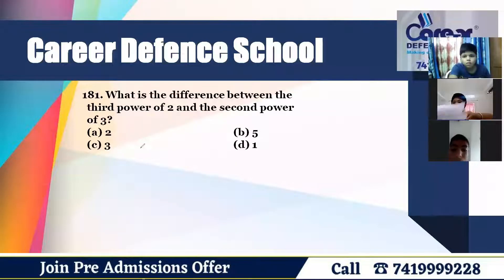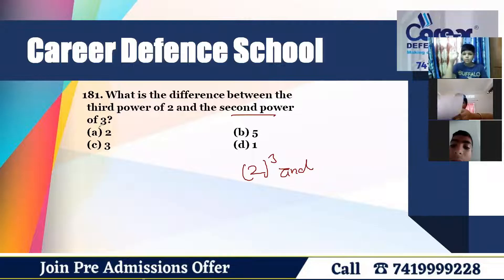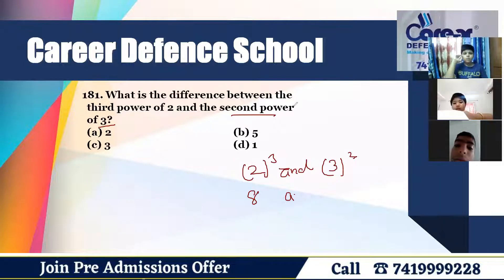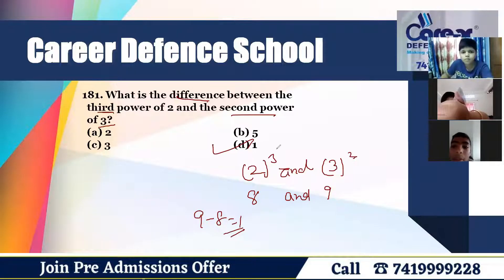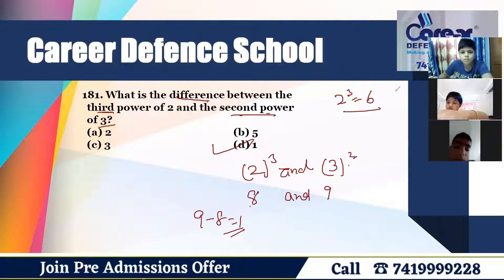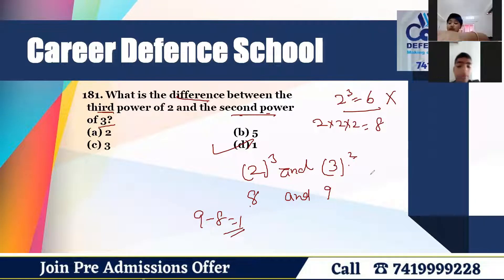What is the difference between the third power of two and the second power of three? Third power of two means two cubed — two's cube is eight. Second power of three means three squared — three squared is nine. Nine minus eight equals one. That is option three. Note: two power three should not be written as six — you must multiply two by itself three times.